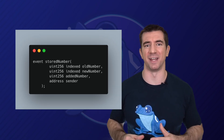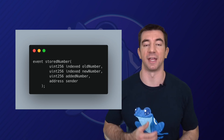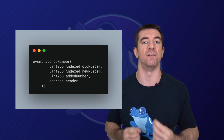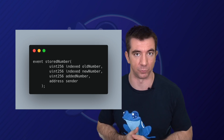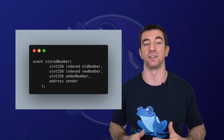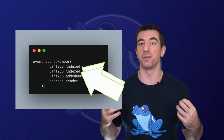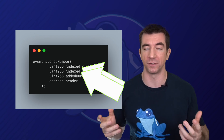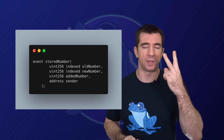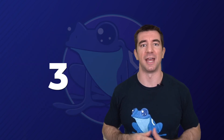Now that we know what events are, let's look at what they look like and how we can use them. Here's what an event looks like — we have an event called StoredNumber. We're telling Solidity we have this new event type and we're going to be emitting things of type StoredNumber in the future. When we emit this event, it's going to have four parameters: a uint256 called old number, a uint256 called new number, a uint256 called added number, and an address called sender. You might notice another keyword — the indexed keyword. When we emit one of these events, there are two kinds of parameters: indexed parameters and non-indexed parameters. You can have up to three indexed parameters, also known as topics.